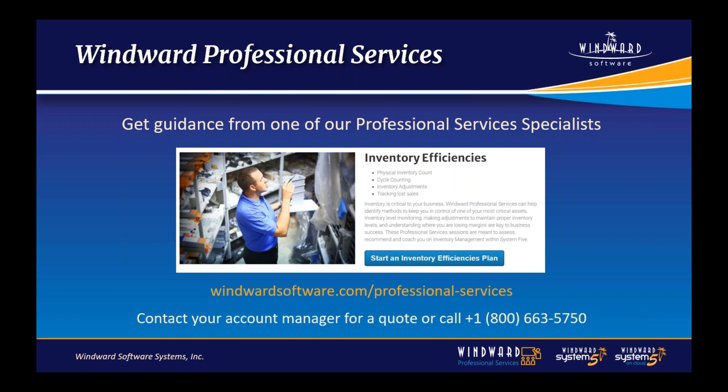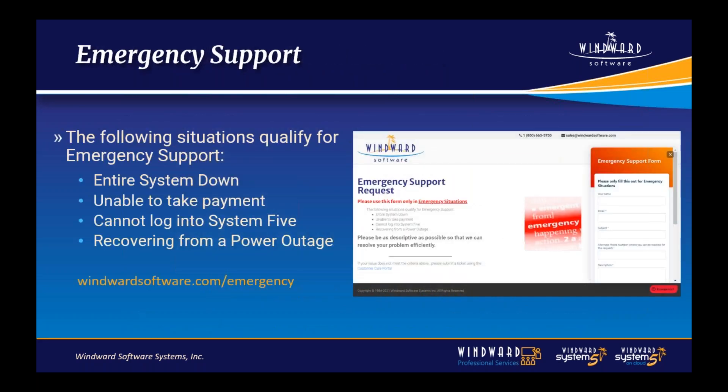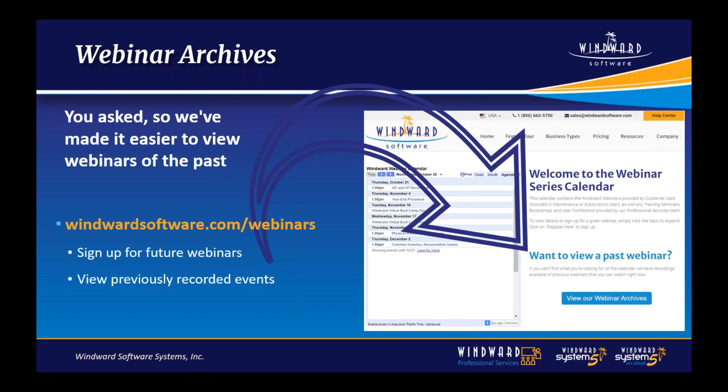We also have Winward Professional Services, where you can get guidance from one of our professional services specialists — for example, if you want to start an inventory efficiencies plan. You can access winwardsoftware.com/professional-services, contact your account manager, or call 1-800-663-5750. We also have emergency support for situations like an entire system being down, unable to take payment, cannot log into System Five, or recovering from a power outage — accessible at winwardsoftware.com/emergency. You can also access webinar archives and sign up for future webinars at winwardsoftware.com/webinars.